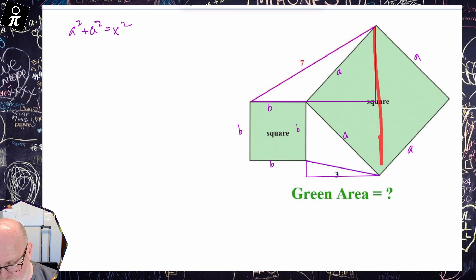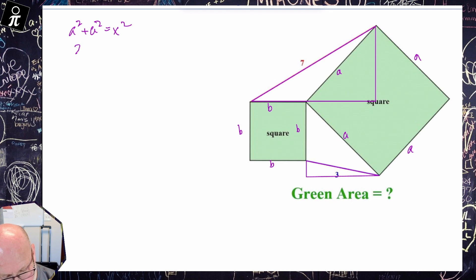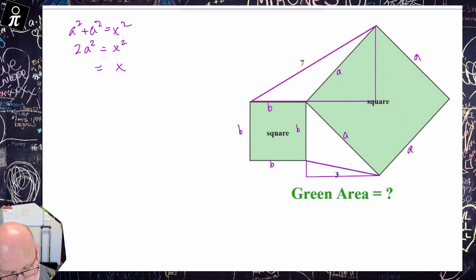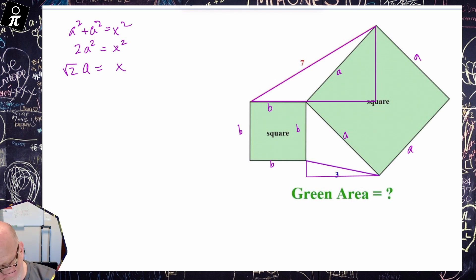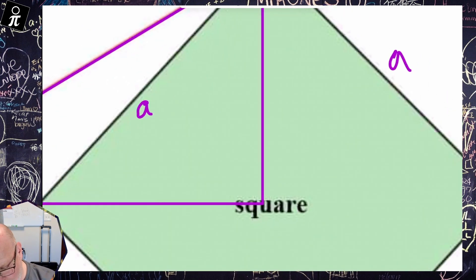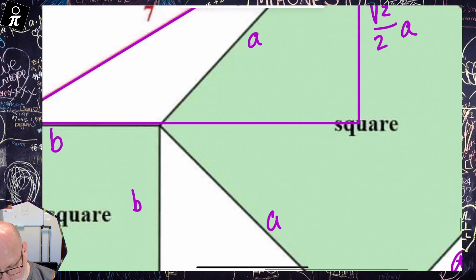Let's call this square all B's. Because I know that this side and this side are A's, this diagonal becomes our hypotenuse. So A squared plus A squared equals that hypotenuse squared — let's call it X squared. So 2A squared equals X squared, and taking the square root of both sides gives us the square root of 2 times A. That tells us the entire diagonal length is √2·A, which means just half of that length is √2/2·A.